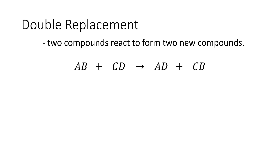For example, the first element of the first compound, which is A, will combine with the second element or the polyatomic anion of the second compound, while the first element of the second compound, which is C, will combine with the second element or polyatomic anion of the first compound.